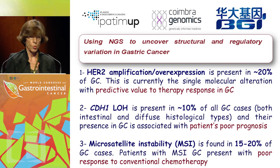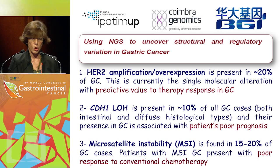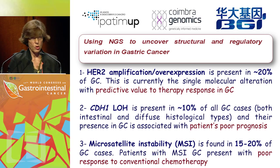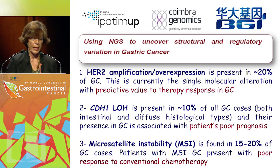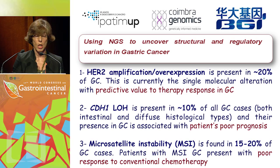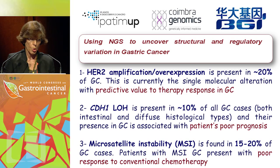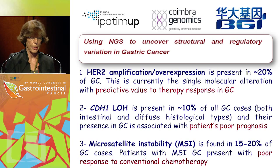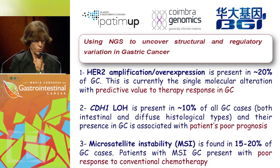What we are doing now with this knowledge is participating in a consortium encompassing our research institute IPATIMUP in Porto together with another center in Coimbra and BGI, settled in Beijing, China. We have characterized our series of gastric cancers according to HER2 amplification, CDH1 loss, and microsatellite instability. Using an NGS approach, we are asking which molecular features within each of these groups could help us understand the predictive value of therapy, why patients with tumors losing E-cadherin expression have poor prognosis, and better explain microsatellite instability.